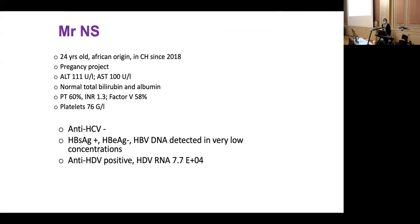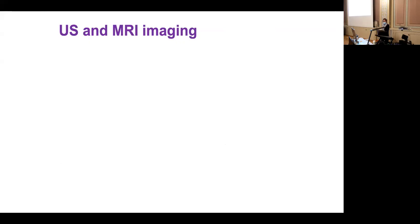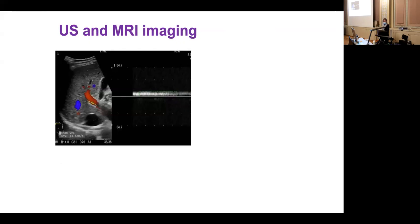Complementary analyses show a positive serology for HBV, with a positive HBs antigen, but HBV DNA is detected only in very low concentrations. The first key message: in every patient with HBV, you must screen for delta. That was done, and a co-infection with hepatitis delta was detected.